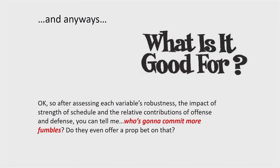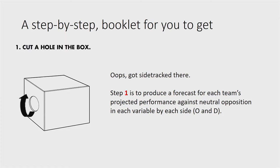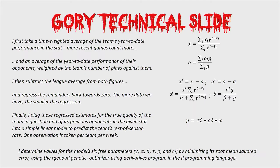So what is all this good for? We go to all this work assessing how robust each variable is, how well it predicts itself, strength of schedule, relative contributions of offense and defense — and the goal is to take each team's projected performance against a neutral opposition in each variable for both the offense and the defense. Given a team's past fumble rate, strength of their opponents, etc., we convert that into a projection of what their fumble rate would likely be going forward in neutral conditions.